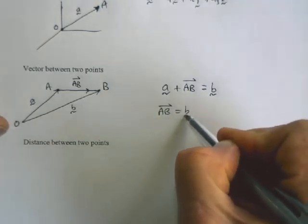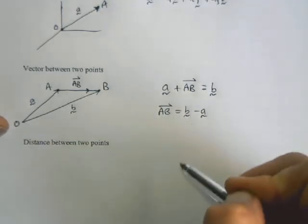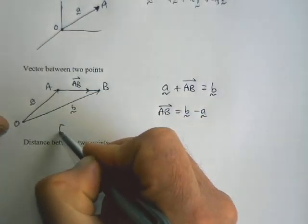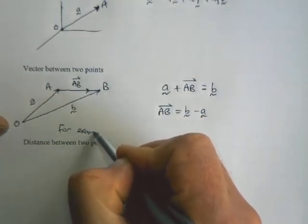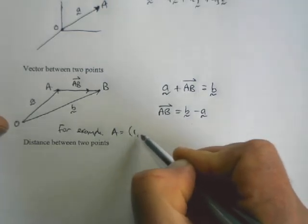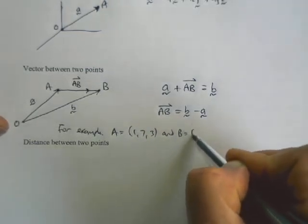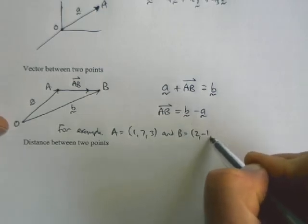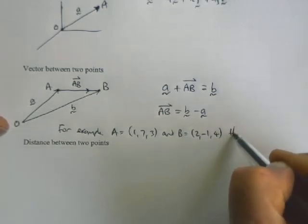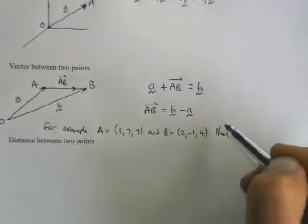And then a little bit of algebra tells us that the vector AB is equal to B minus A. Okay, so for example, if we have a couple of points, so A is 1, 7, 3, and B is 2, negative 1, 4.